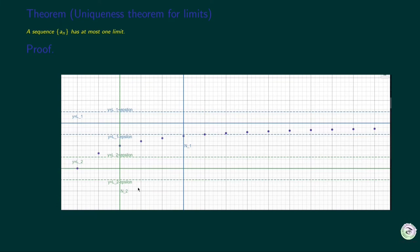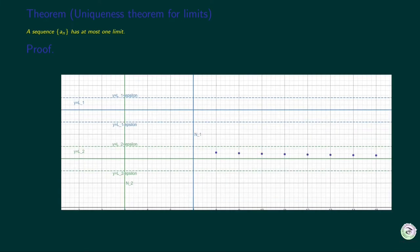Now, if you consider the terms after larger N, in this instance it's n1, they should lie in the blue tube around l1. Also, they are after n2. Therefore, they should lie in the green tube around l2. That is, they should lie on both tubes. The observation should hold for all positive epsilon values.